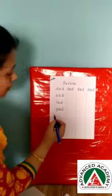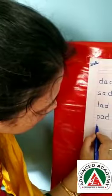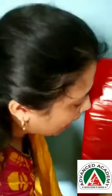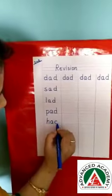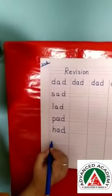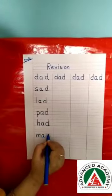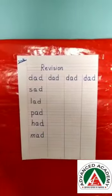We will write one more word. That is H, A, D — Had. Then we will write M — you have to close your lips and say M — A, D — Mad.